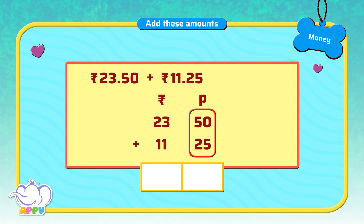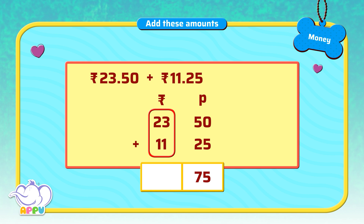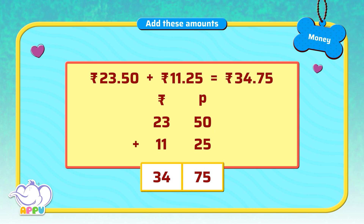Let's add the paise first. 50 plus 25 equals 75. Let's add the rupees. 23 plus 11 equals 34. So 23 rupees 50 paise plus 11 rupees 25 paise equals 34 rupees 75 paise.